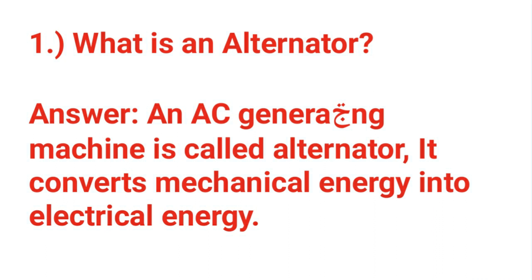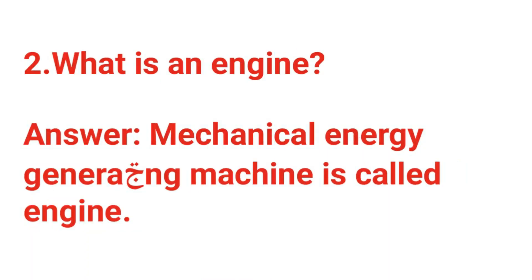First question: What is an alternator? An alternator is a machine that converts mechanical energy into electrical energy. What is an engine? An engine is a machine that converts kinetic energy into mechanical energy. A mechanical energy generating machine is called an engine.